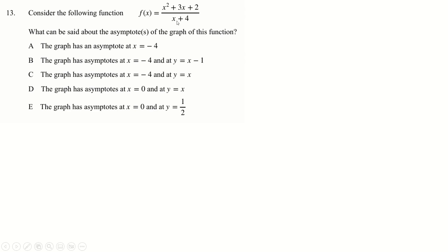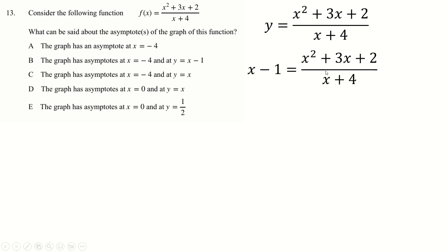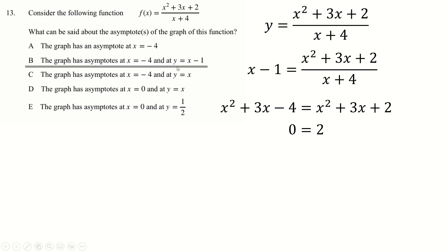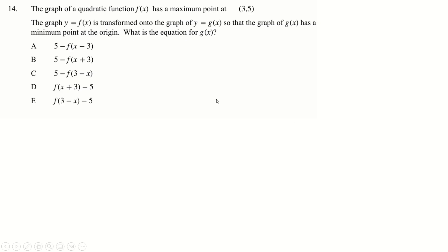This graph clearly has an asymptote at x = -4 because you can't divide by zero. There are other asymptotes too, so it's either A, B, or C. Ask yourself what happens if you put y = x - 1: cross-multiply and all the x's end up cancelling, and you get -4 = 2, which is a contradiction. So the asymptote does exist at y = x - 1, and the answer is B.